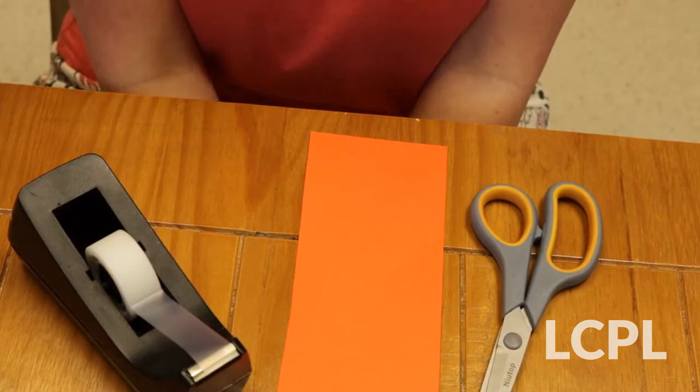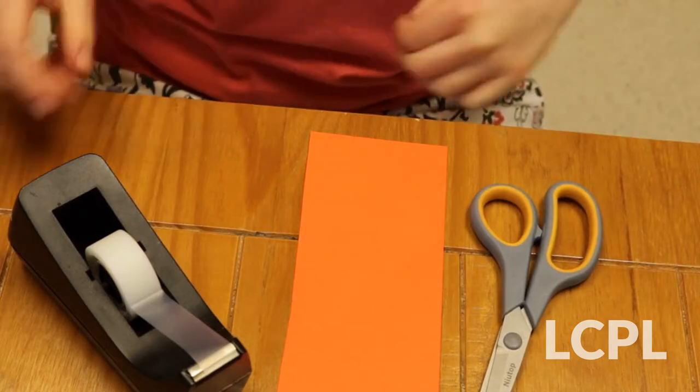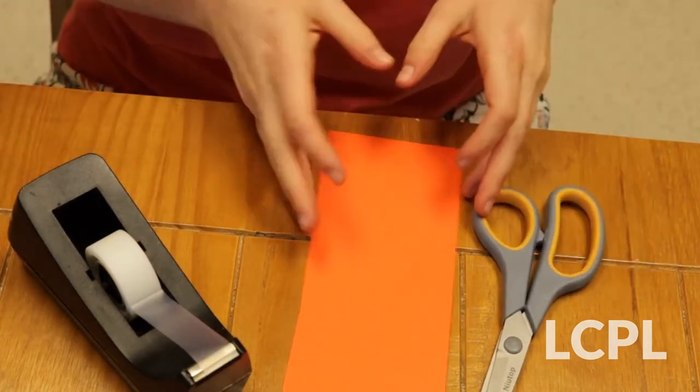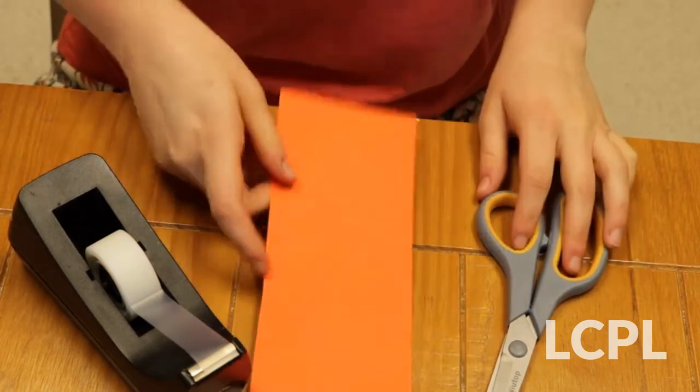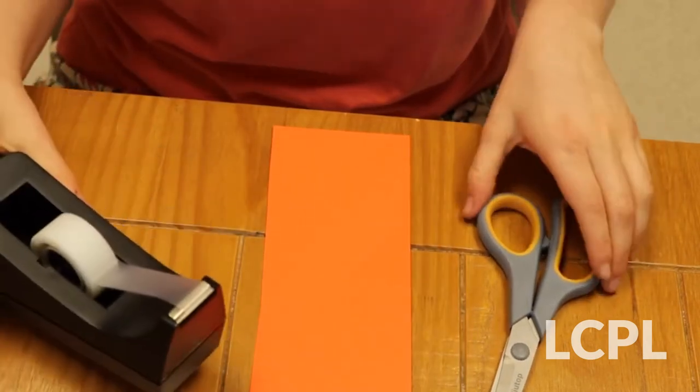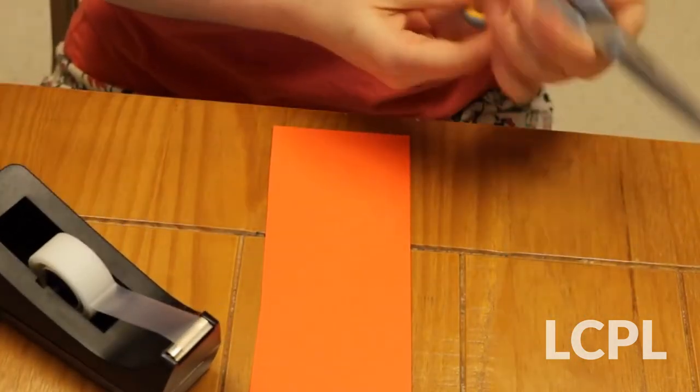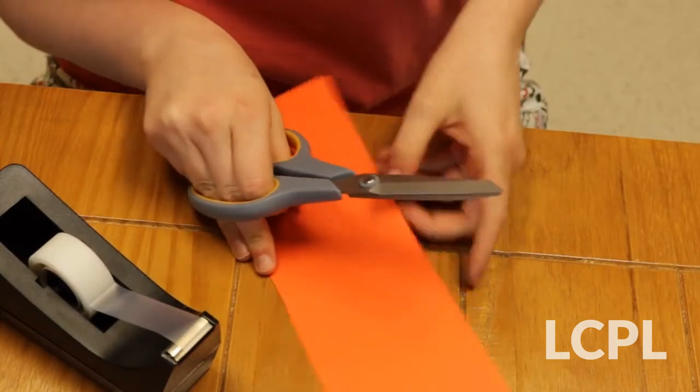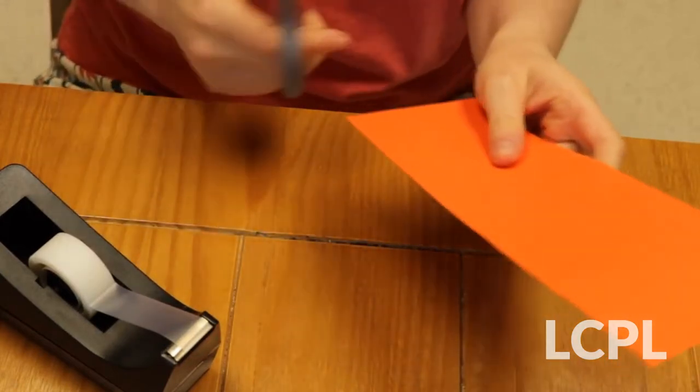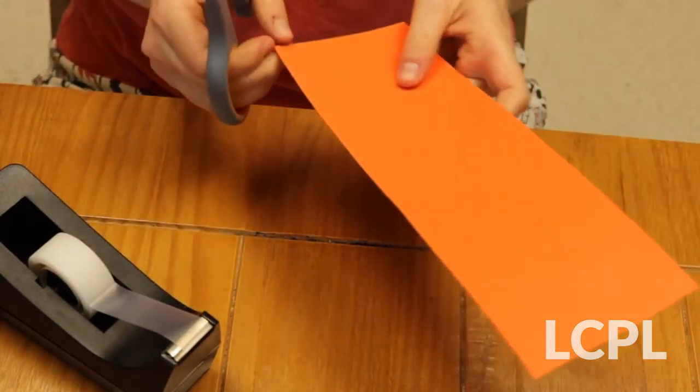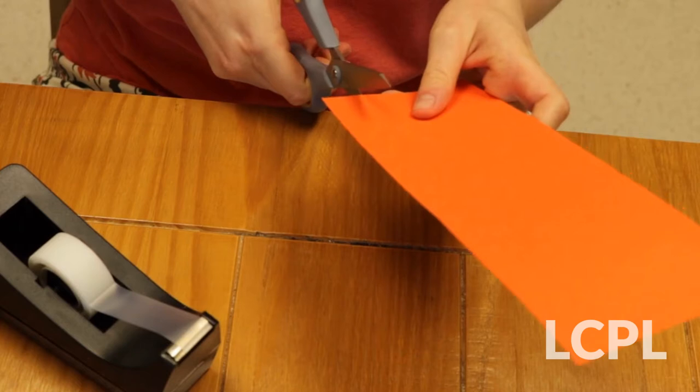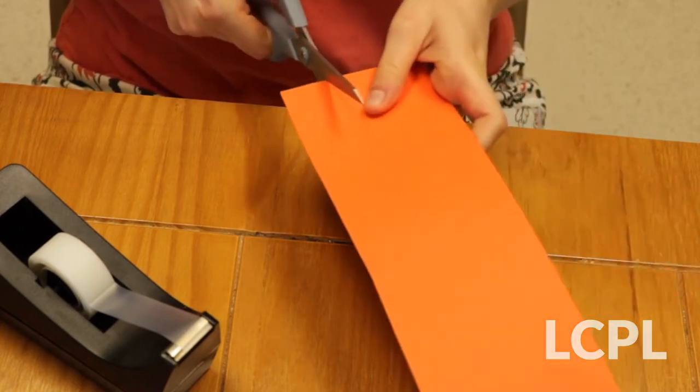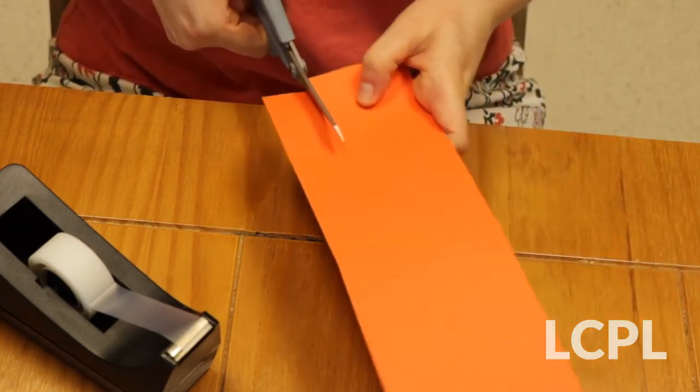So for our very first project we are going to do a magic trick. For this craft you will need a piece of paper, some tape, and some scissors. The first thing you'll want to do is cut out a strip of paper. You don't want it to be too narrow and you don't want it to be too wide, so about an inch and a half or so strip.